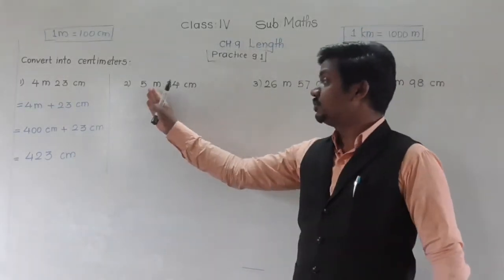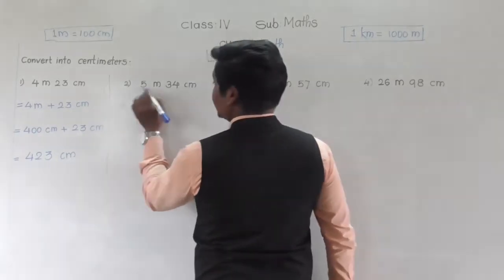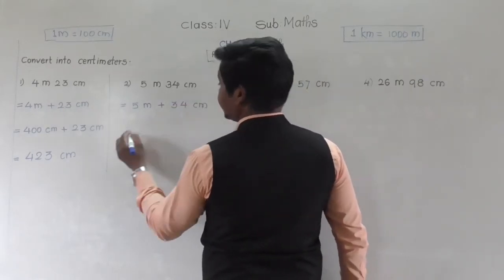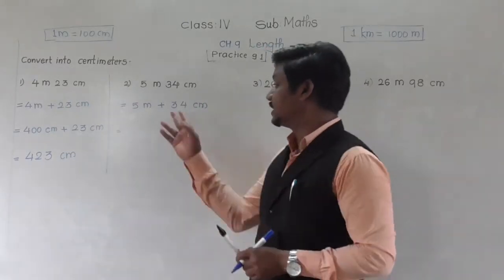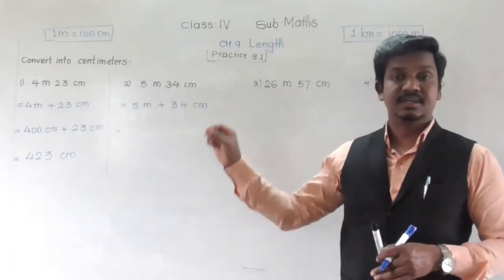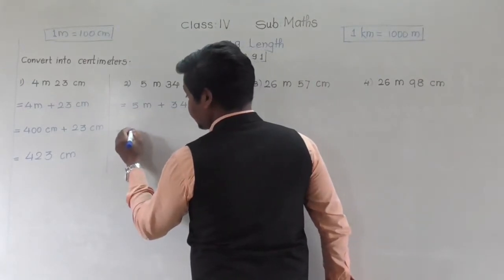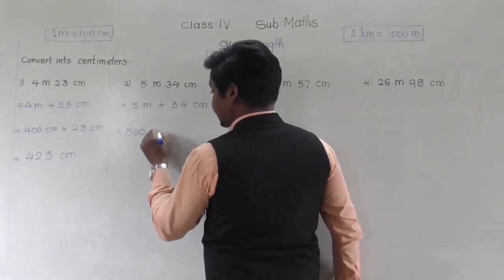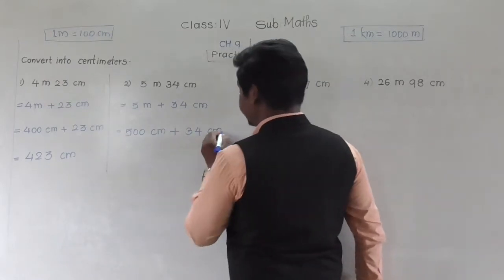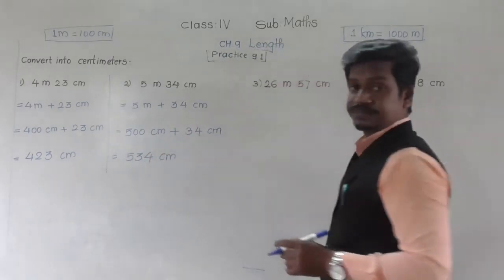Next, the second question: 5 meters 34 centimeters — we have to convert it all into centimeters. Similarly, 5 meters 34 centimeters means 5 meters plus 34 centimeters. The 34 is already centimeters so keep it as is. We convert only 5 meters: 1 meter equals 100 centimeters, so 5 meters equals 500 centimeters. Then 500 centimeters plus 34 centimeters equals 534 centimeters.